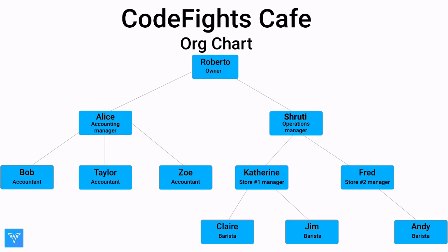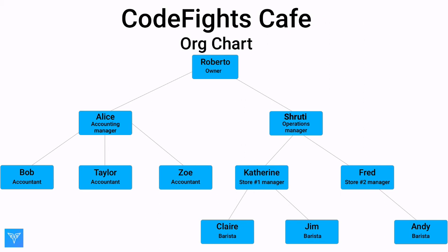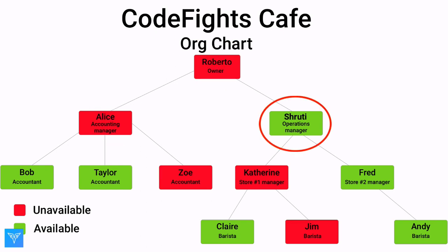The search strategy you use will depend on the type of problem you're trying to solve. For example, let's say you're searching for a particular employee by name. In this case, it makes the most sense to use DFS, because the height of this tree is four, which is smaller than the five people on the third level. But what if you're searching for the highest ranking person available for a shift? Then BFS would be a better choice, because it only explores a lower level once it's exhausted all possibilities at the current level.